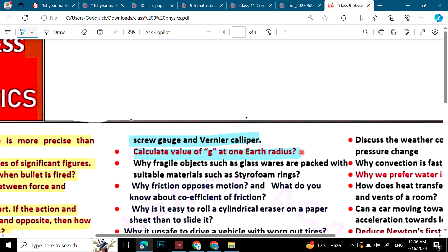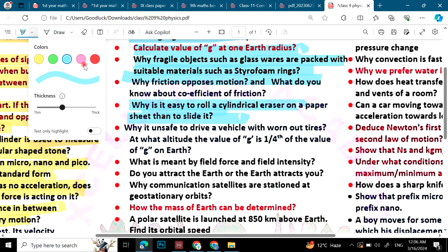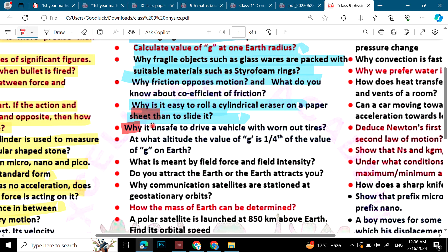Calculate the value of g at one earth radius. Why fragile objects such as glass wares are packed with suitable materials such as styrofoam rings. Why friction opposes motion. Why it is easy to roll a cylinder razor on a paper sheet than to slide it. Why sliding friction is more and how rolling friction is less. Why it is unsafe to drive a vehicle with worn out tires.